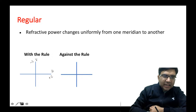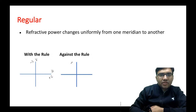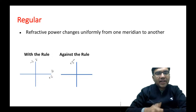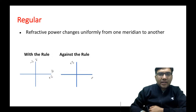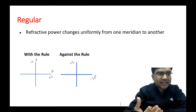The other type is called against-the-rule astigmatism. In against-the-rule astigmatism, you have plus 3 diopter power in the horizontal meridian and minus 2 diopter power in the vertical meridian. This is just an example of against-the-rule astigmatism.